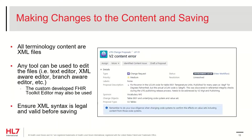Once the copy of the current content has been downloaded to your local machine and you know what tools you'll be using to make the changes to code systems and value sets, you're ready to draft the change proposal. Click the button for Draft a Proposal to move it into the Proposal Draft state. You can add a comment, but it is not necessary. Now you can begin editing the vocabulary artifacts.